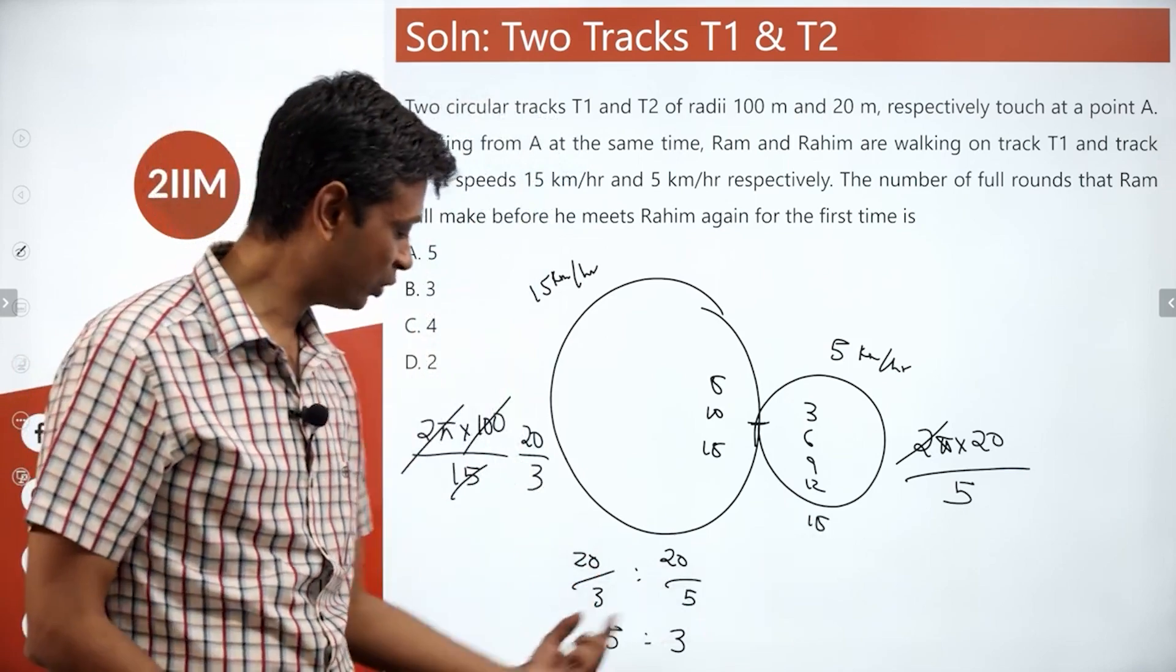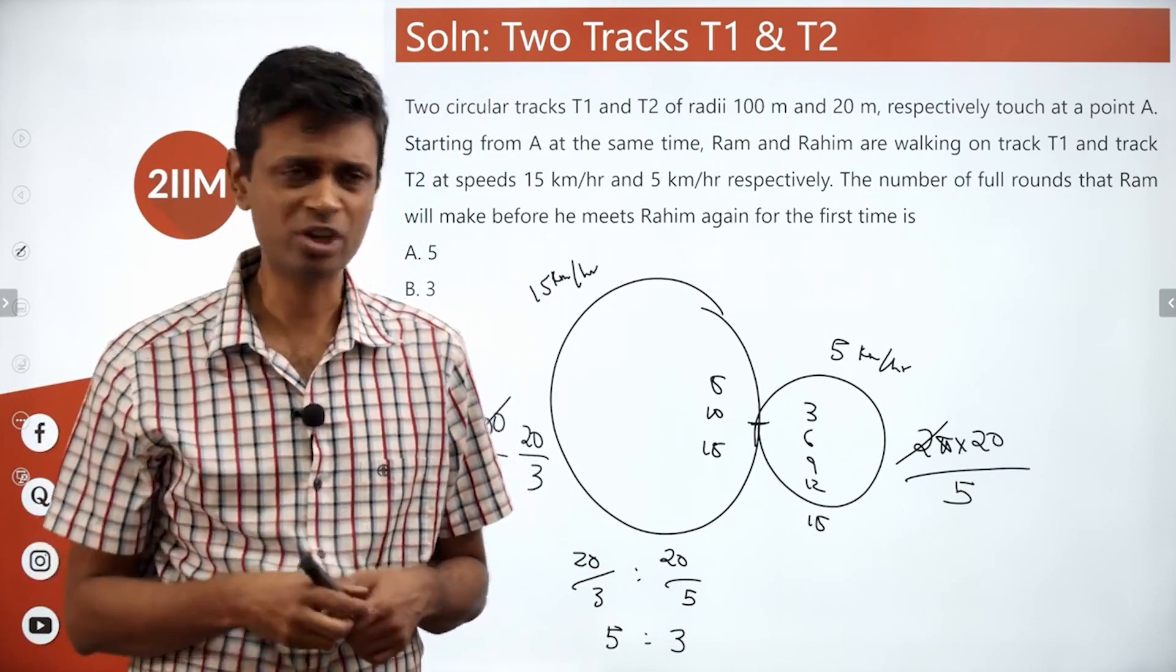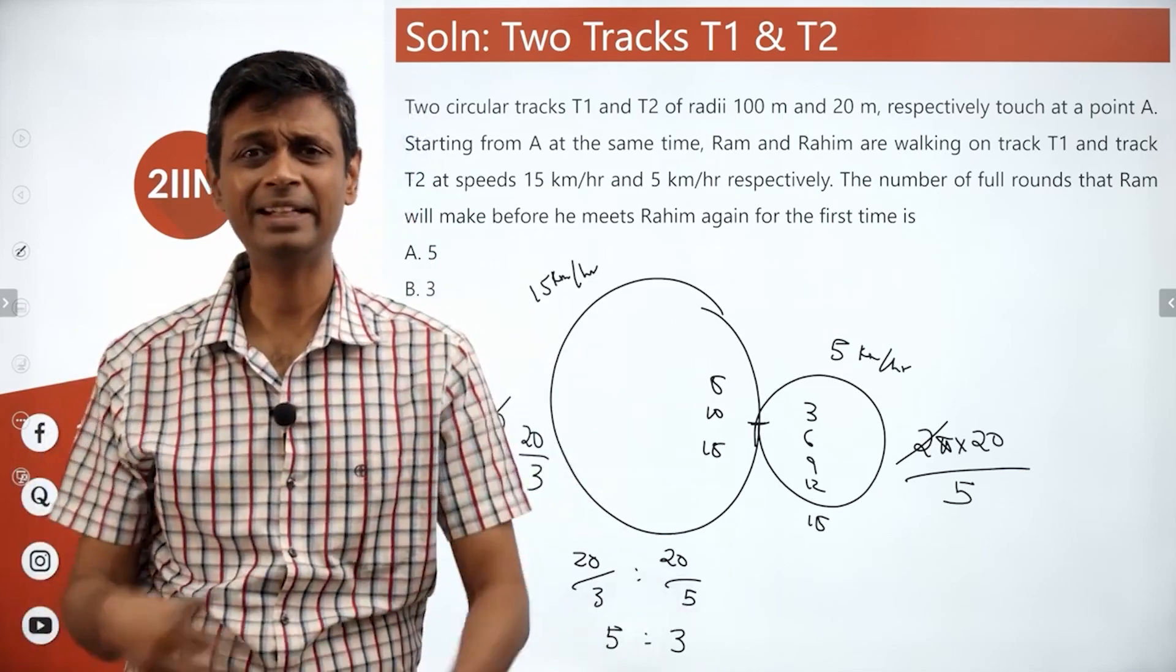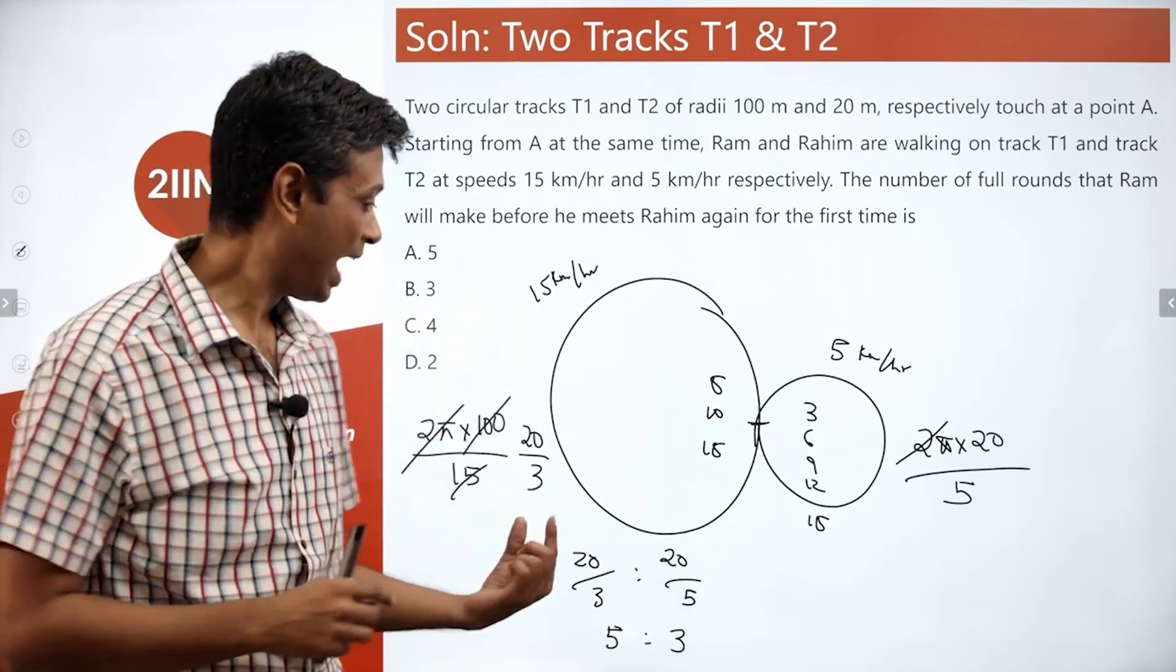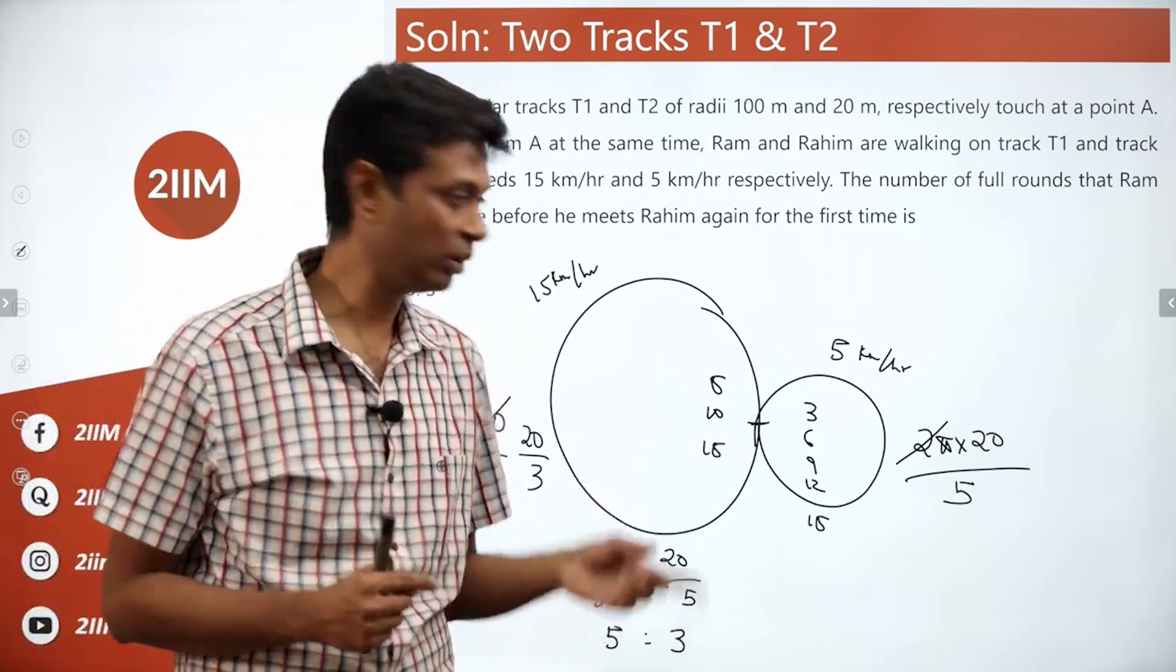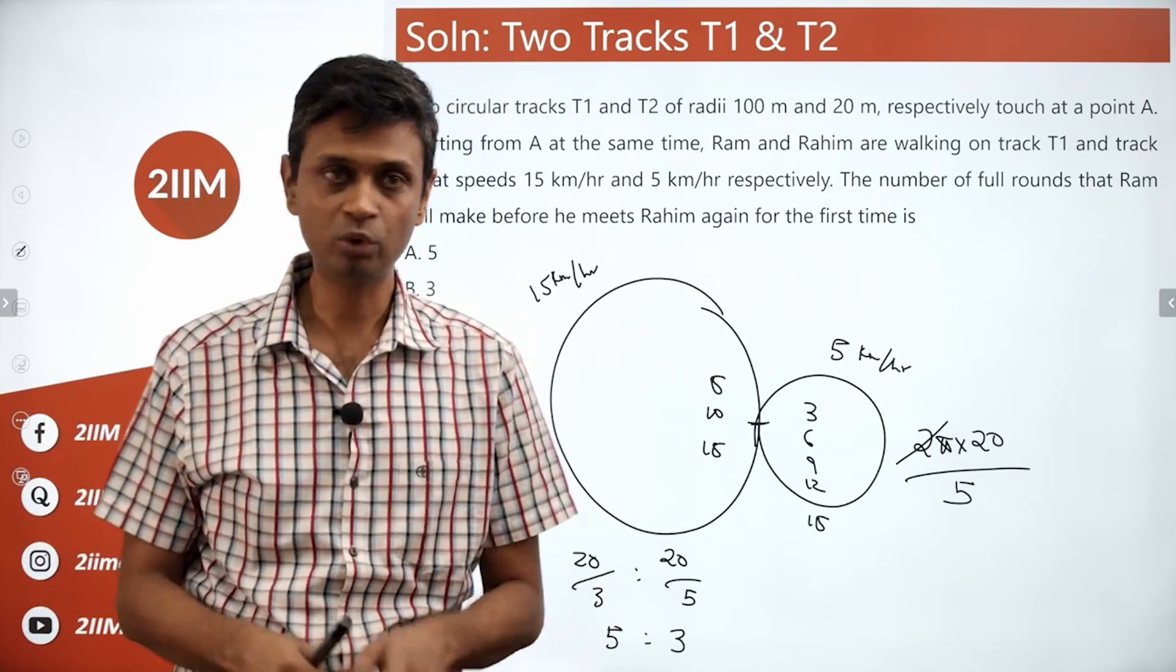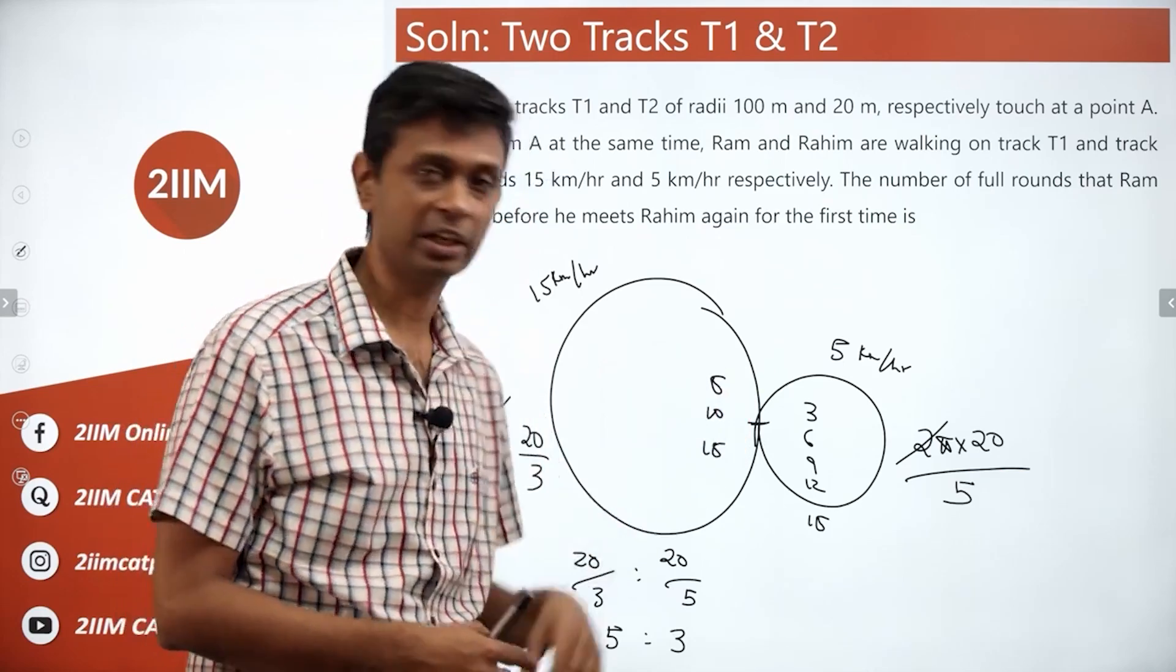If you call this as 5 units and 3 units, after 15 units of time, which involves a pi and 5 by 18, 18 by 5, whatever else we want to do, whatever ratio we want to do. After 15 units, Ram will be at the starting point. After 15 units, Raheem will be at the starting point. Both of them meet here.